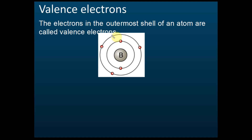This is the outermost shell, but it is not the last shell, because we still have a third, fourth shell and so on. Some students think this atom only has two shells — that's not true. It actually has seven shells, but from the third to the seventh shell, they are not filled with any electrons. The shells are there but empty, so don't think there are only two shells.